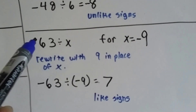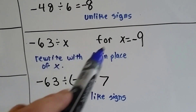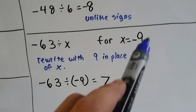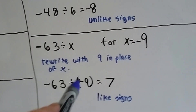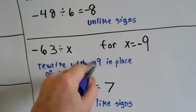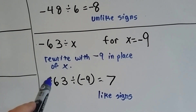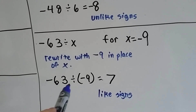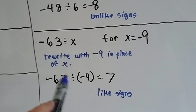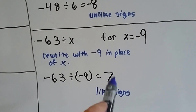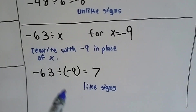We've got negative 63 divided by x, and for x equals negative 9. We rewrite it with the negative 9 in place of the x, so now we've got negative 63 divided by negative 9. These are like signs, so our answer is going to be positive 7.